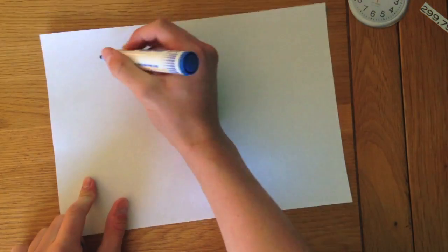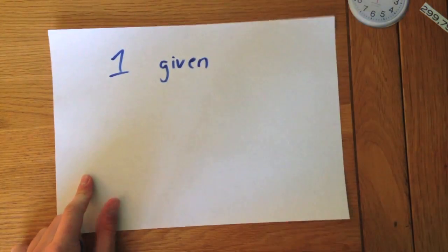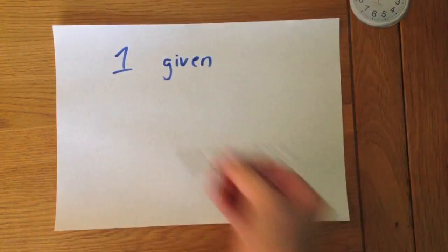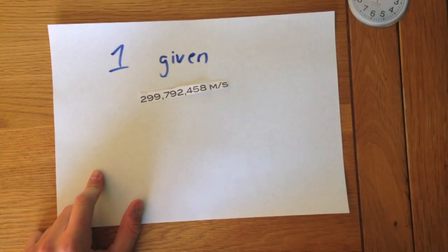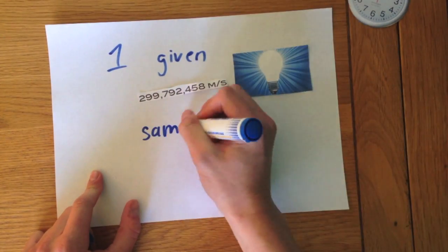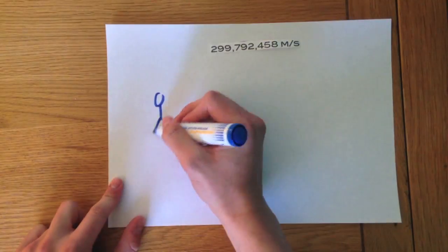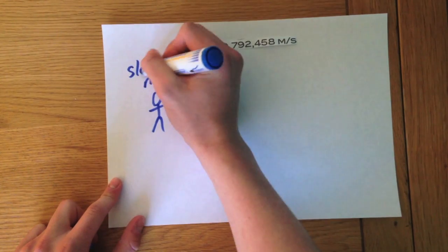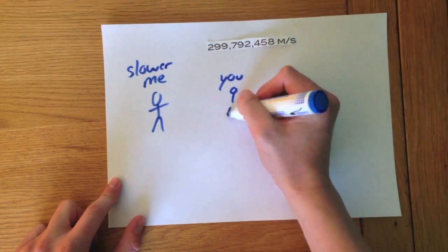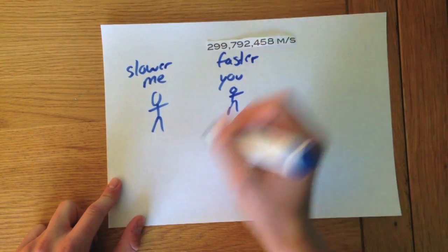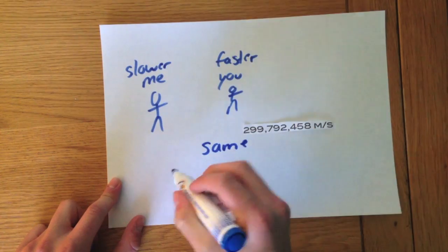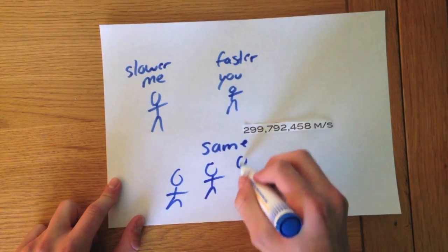The Special Theory of Relativity involves one given, and this is that the speed of light is the same for everyone. What this means is that the speed of light isn't slower for me or faster for you, simply that the speed is the same for everyone.